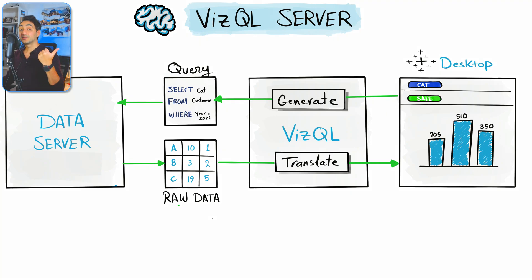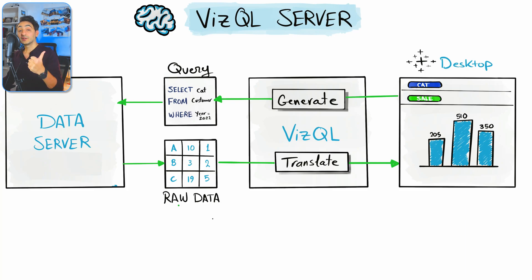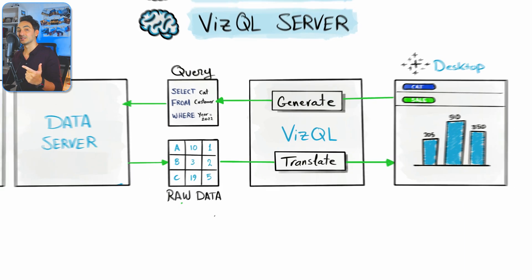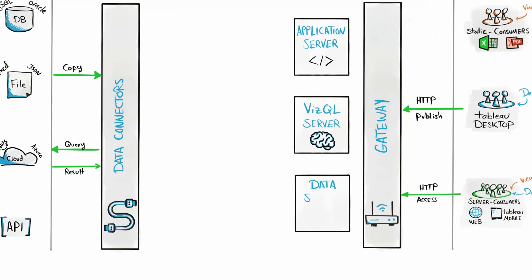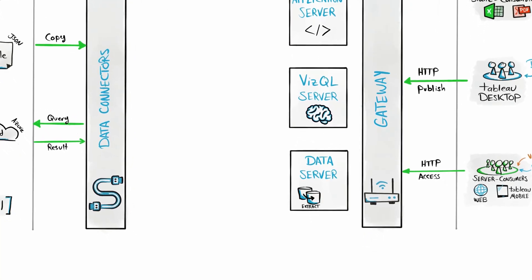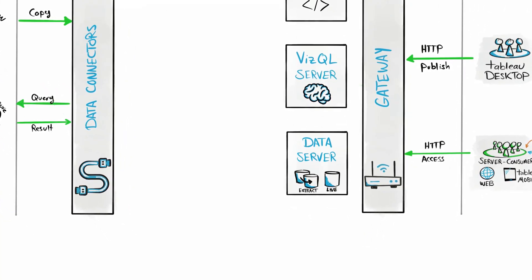So VizQL is the brain — a very important Tableau component responsible for the visualization process. It mainly does two things: it generates queries from user actions, and it converts and transforms raw data into visuals and images.